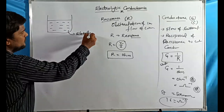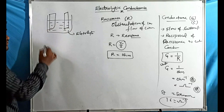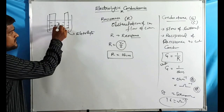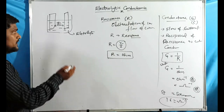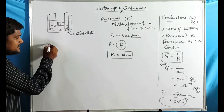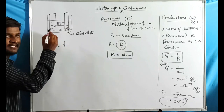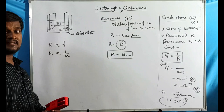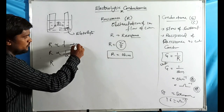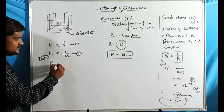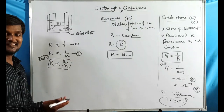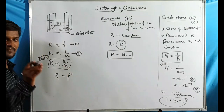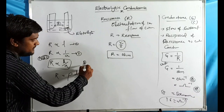In the electrolytic cell, there are two electrodes: one positively charged (anode) and one negatively charged (cathode). The distance between the two electrodes is called length L, and the cross-sectional area is A. Resistance is directly proportional to L and inversely proportional to A, giving R ∝ L/A.